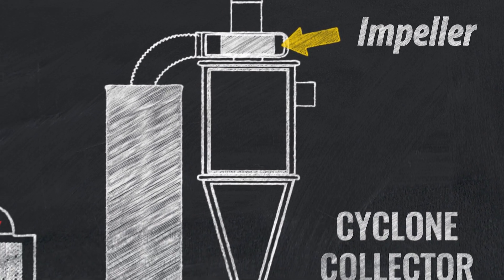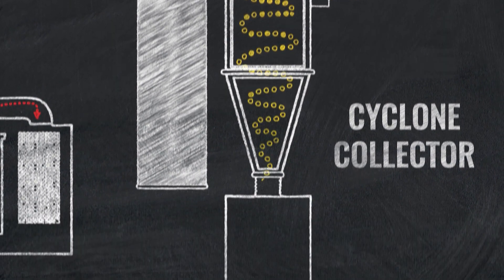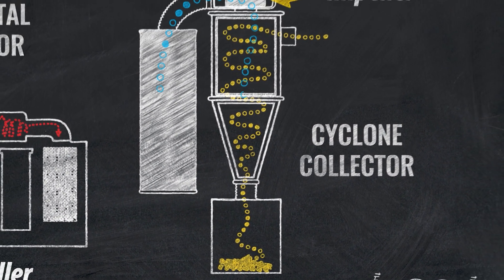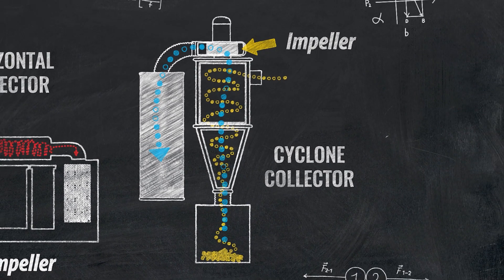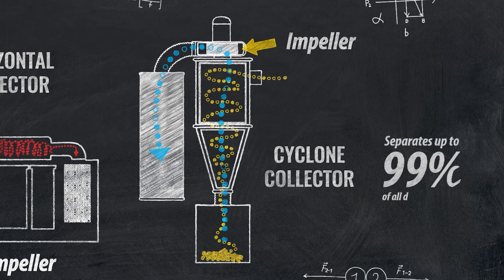As material enters the cyclone, gravity pulls nearly all the debris down to the dustbin below, while centrifugal force spins a small fragment of the finest dust which has very little chance of causing damage up to the impeller.